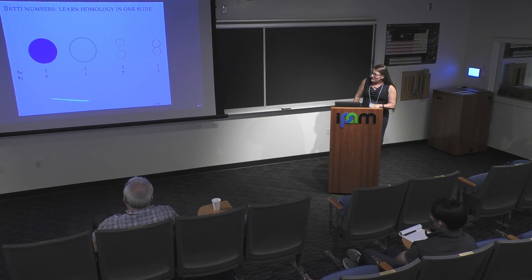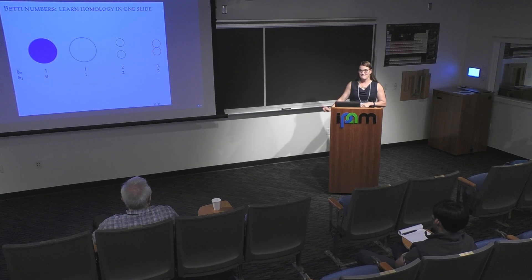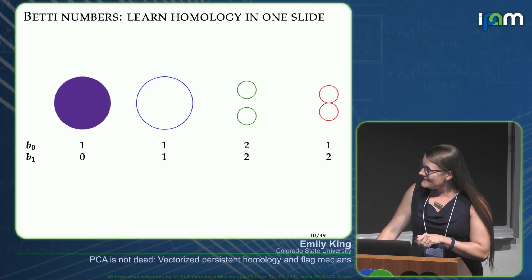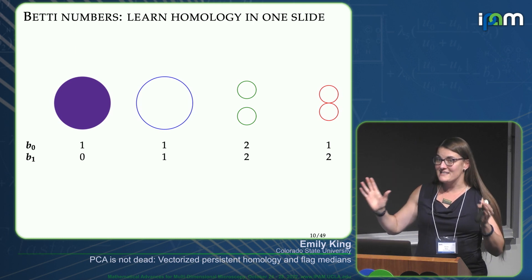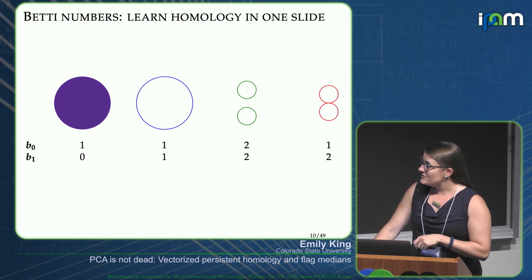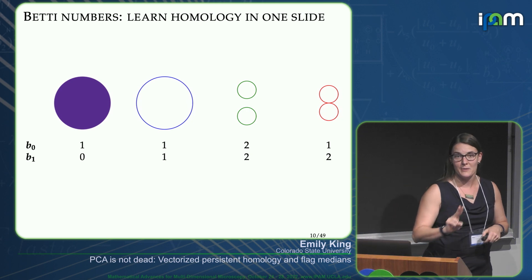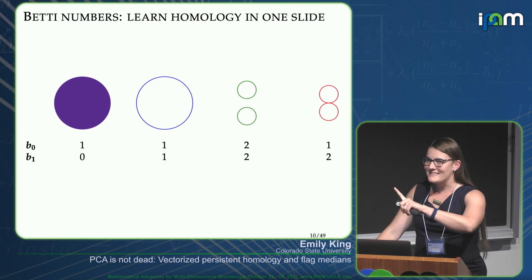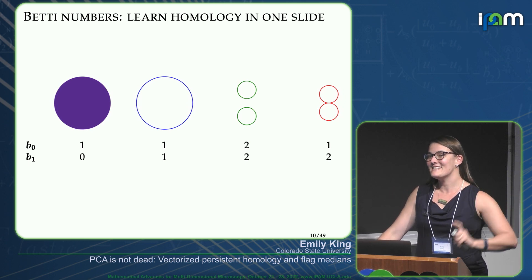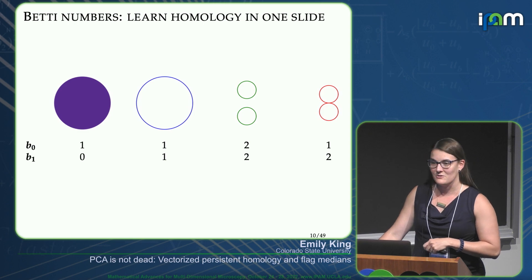I'm going to teach you topological data analysis, starting with homology in one slide. We have four different spaces: a purple disk, a blue circle, two disconnected green circles, and two connected red circles. To each of them I'm assigning two numbers. Does anyone want to hazard a guess at what these pairs of numbers mean?